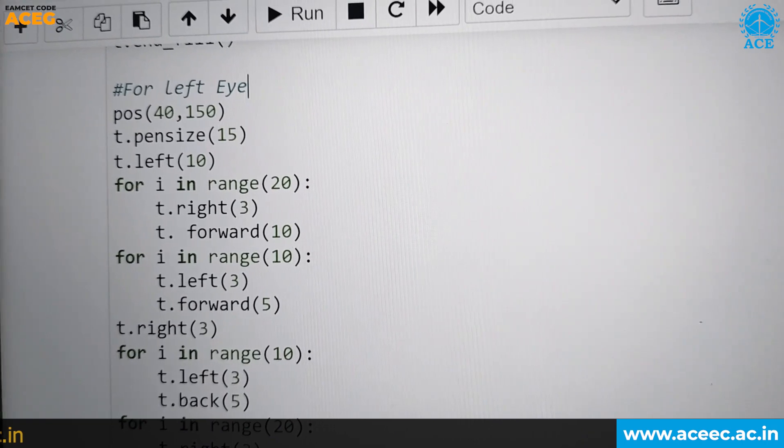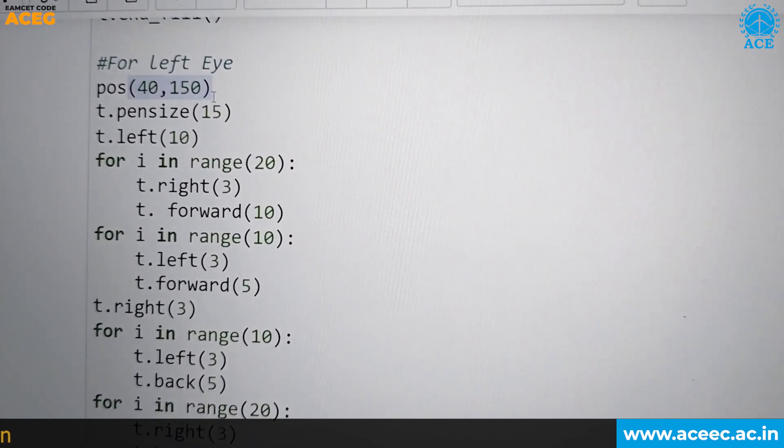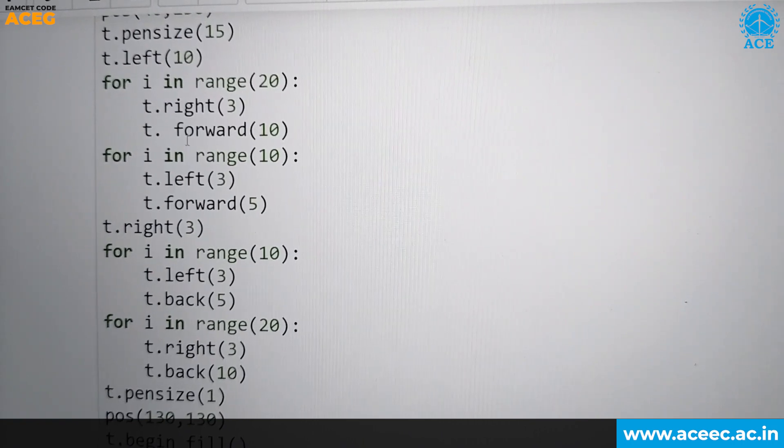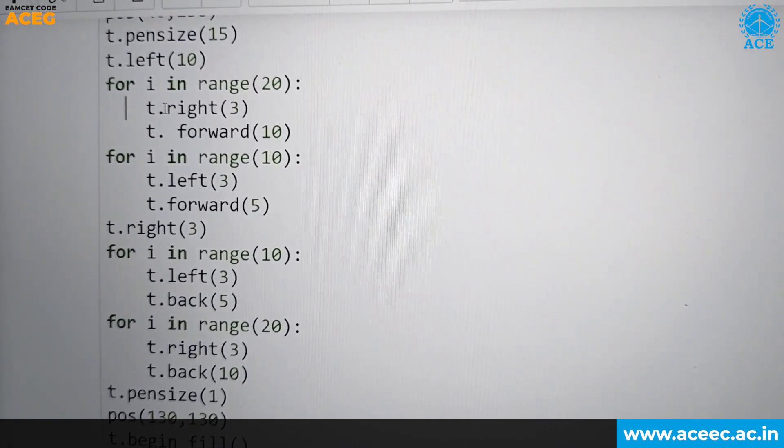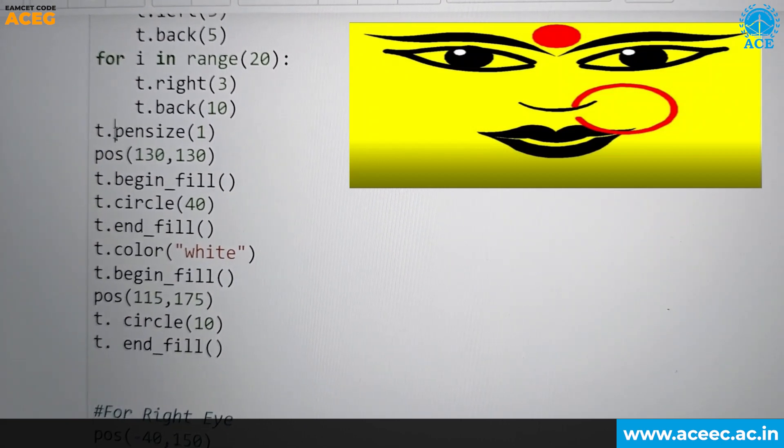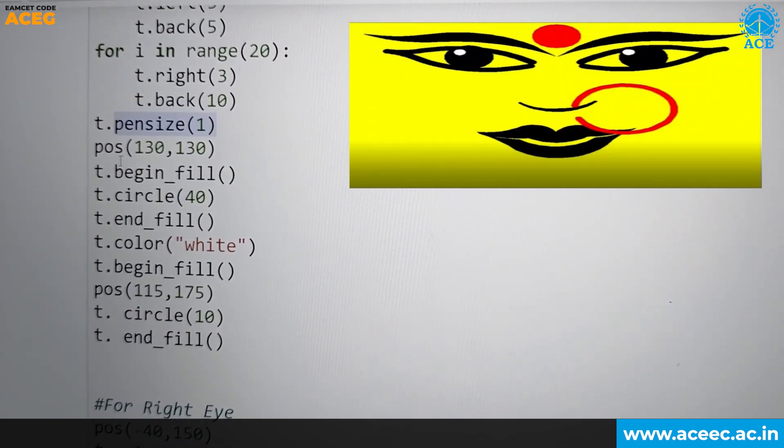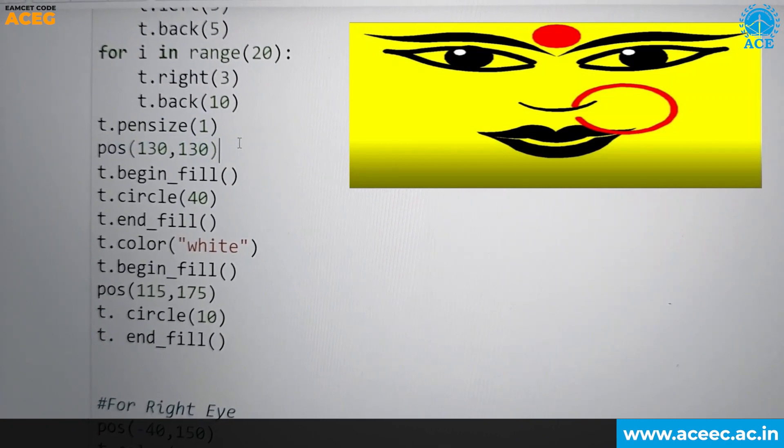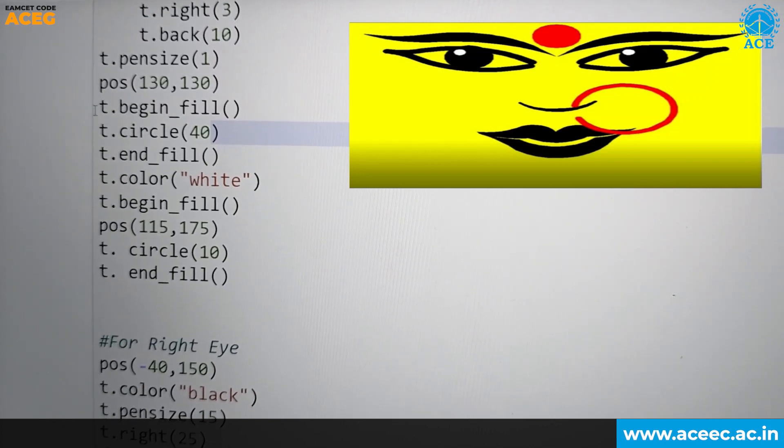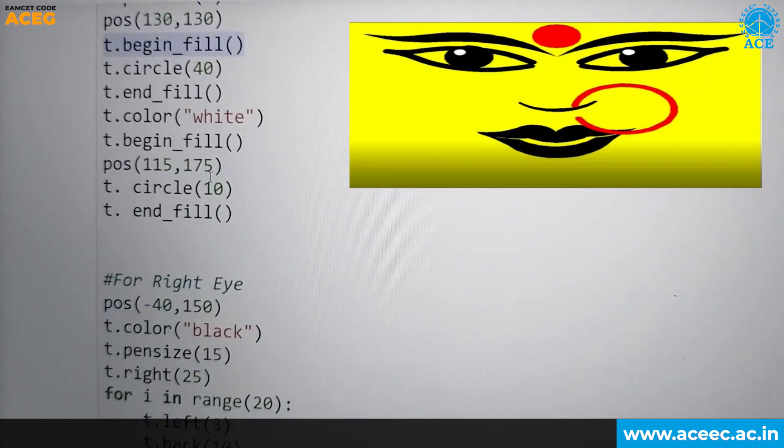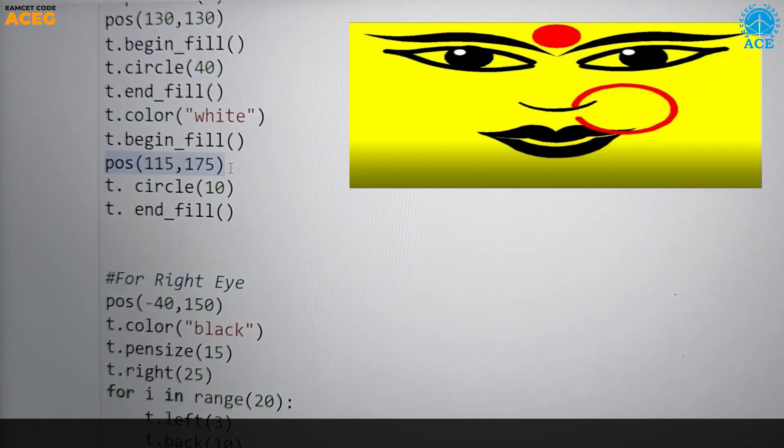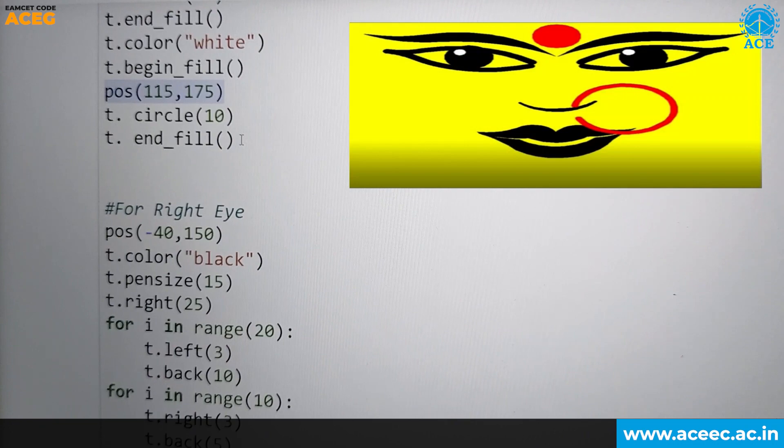Coming to the left eye, the positions may vary. We declare the positions here as 40 and 150. We use the pen size for 15 which will start from left side. We declare the outer for loops and inner for loops. In this we use different attributes like right, forward, left, and back. This will be iterated number of times here also. For inner circle, which is the main eye, the pen size will be one, which will be slightly smaller than the outer eye. We declare the positions here 130 and 130, which will be inside the eye. That will be a circle with radius 40. The circle will be filled with a method called begin fill. In that eye, there will be also a small color which will be white. It will be in position 115 and 175. To end that circle, we use another method called end fill.